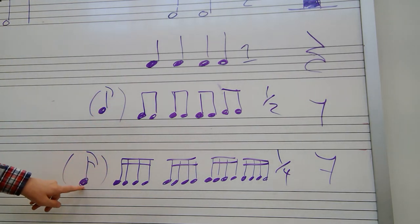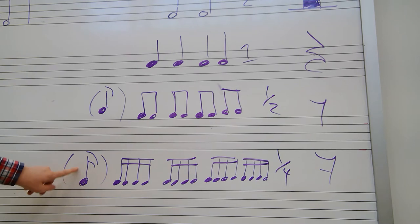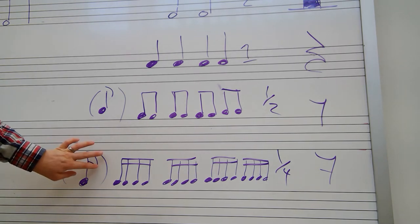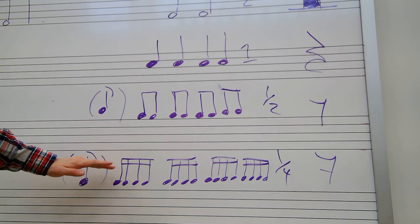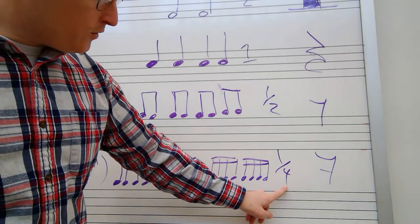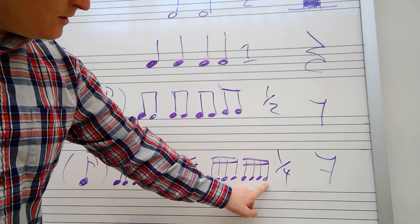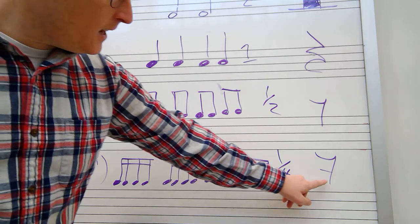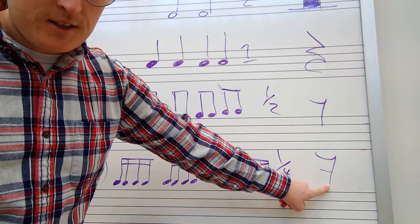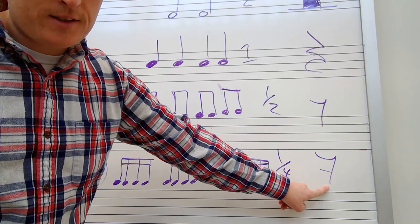When they're separate they look like this with the note head, the stem, and two flags. So we just double it from the eighth note. They're worth one quarter of a beat each. And this is a sixteenth note rest.